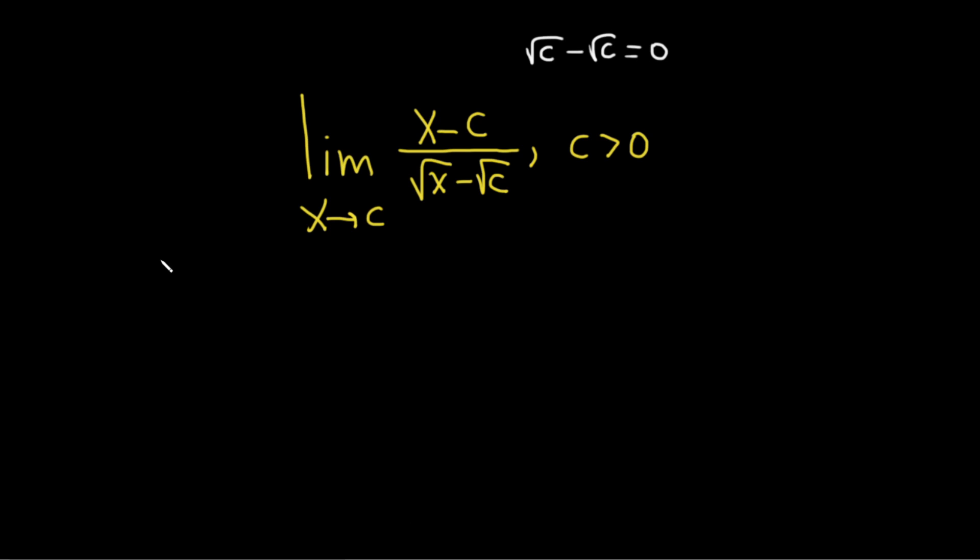So we need a new strategy, and I'm going to show you what that new strategy is. So we have the limit as x approaches c. In the numerator we still have this, and I'm just going to rewrite it again one more time. And that strategy is called rationalizing. We're going to multiply by what's called the conjugate.